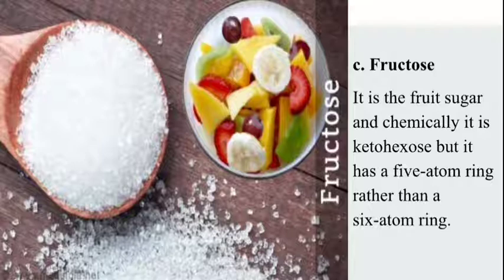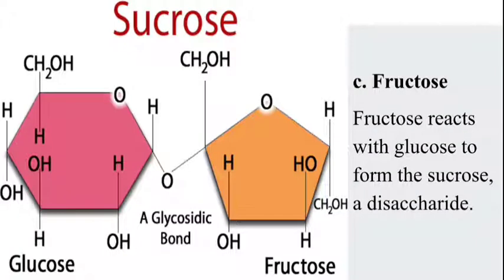The third type of monosaccharide is fructose. It is the fruit sugar, and chemically it is a ketohexose, but it has a 5-atom ring rather than the 6-atom ring found in most sugars. Fructose is found in all sweet fruits — the sweetness of fruits is due to fructose. Fructose reacts with glucose to form sucrose, a disaccharide. Just as glucose and galactose combined to form lactose, glucose and fructose combine to form the sucrose molecule.